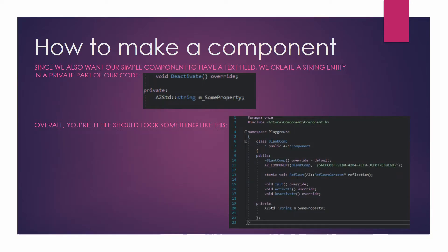Since we also want our sample component to have a text field, we create a string member in a private part of our code. To do this, we do private: and then on the next line, AZStd::string m_someProperty;